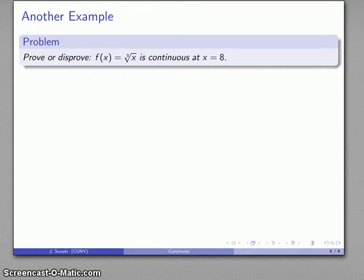Let's take a look at another example. Prove or disprove f of x equals the cube root of x is continuous at x equal to 8. So again we want to find the function value at 8, so we'll just substitute 8 into our function formula, f of 8 equals the cube root of 8, and we solve that, f of 8 equals 2.